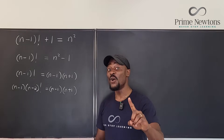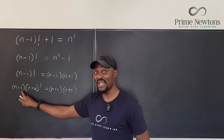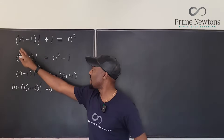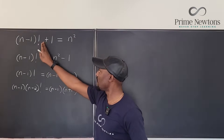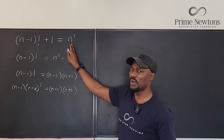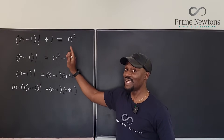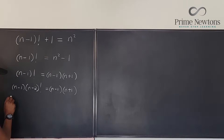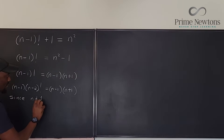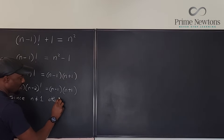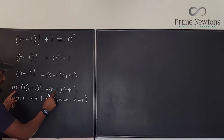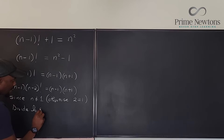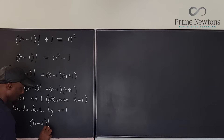I know n ≠ 1 because if n were 1, the left side would be 0 factorial plus 1 equals 1+1 equals 2, but the right side would be 1² equals 1. That gives 2 = 1, which is false. So since n ≠ 1, we can safely divide both sides by (n-1), leaving (n-2) factorial equals n+1.